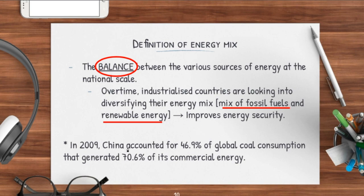Just a simple example: in 2009, China actually accounted for 46.9% of global coal consumption, which generated 70.6% of its commercial energy. It basically means that in 2009, China managed to generate 70.6% of its energy by using almost 50% of the entire world's coal availability — which is a lot, because a lot of other countries would not be able to use this fuel in producing energy.